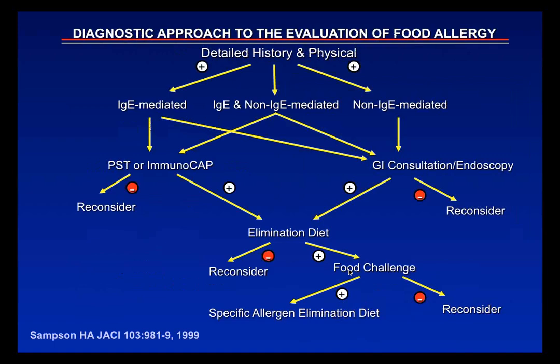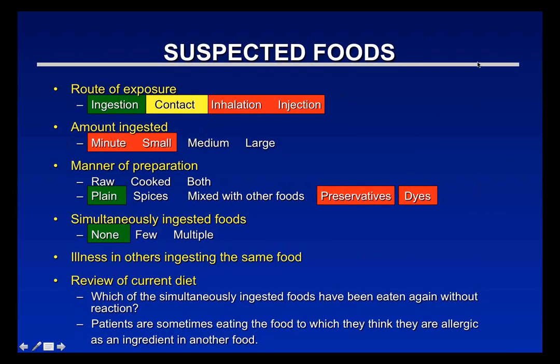When evaluating a patient for food allergy, we start with a detailed history and physical examination, then determine whether the reaction is IgE-mediated, mixed, or non-IgE-mediated. This matters because skin testing or measuring allergen-specific IgE is helpful only if we think the reaction is IgE-mediated or mixed. In taking the history, we focus on which foods are suspected, the route of exposure, and whether reactions occur with contact or ingestion.